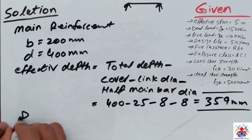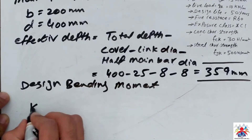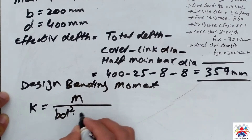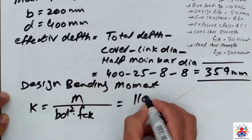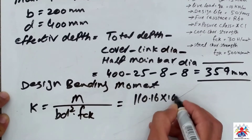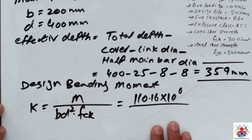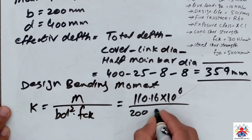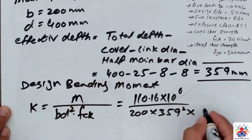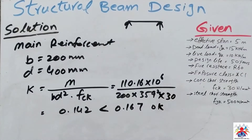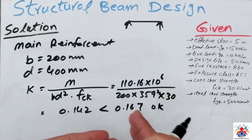Now we have to calculate the design bending moment coefficient K. The formula is K = M / (b·d²·fck). Bending moment is 110.16 multiplied by 10 to the power 6, divided by 200 multiplied by 359 squared multiplied by fck of 30. The final answer is 0.142, which is less than 0.167 — the standard maximum K value — so we are within the limit.